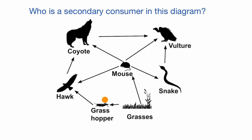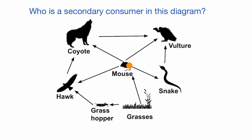Let's make sure we understand this diagram. When we have an arrow from grasses to mouse, it means that the grasses go into the mouse's mouth — the mouse eats the grasses. Similarly, the grasshopper eats the grasses. And then we have arrows from the mouse to the coyote, the hawk, the snake, and the vulture, meaning all of these characters may eat the mouse.